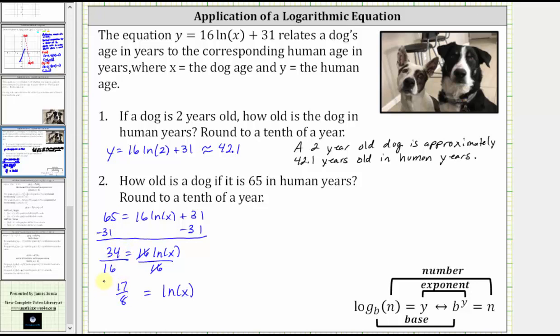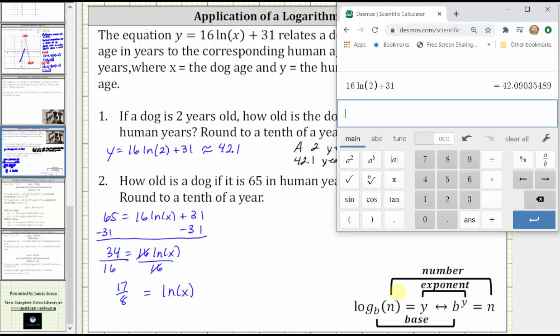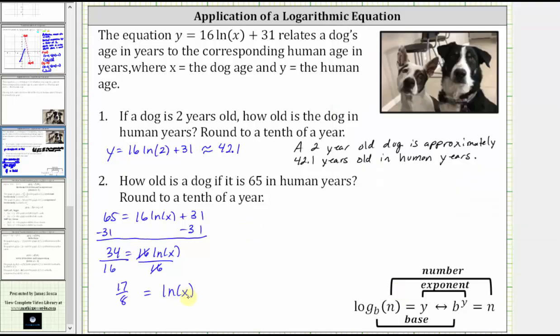And we can check this on the calculator by entering 34 divided by 16, enter, and then click the convert to fraction button here on the right, which does give us 17 eighths.